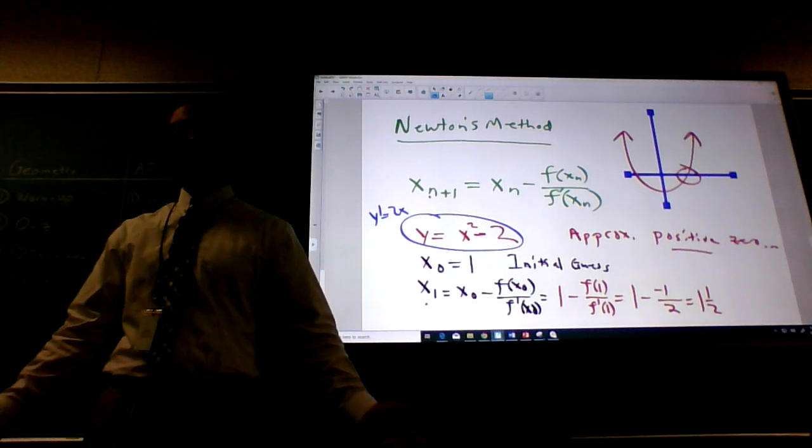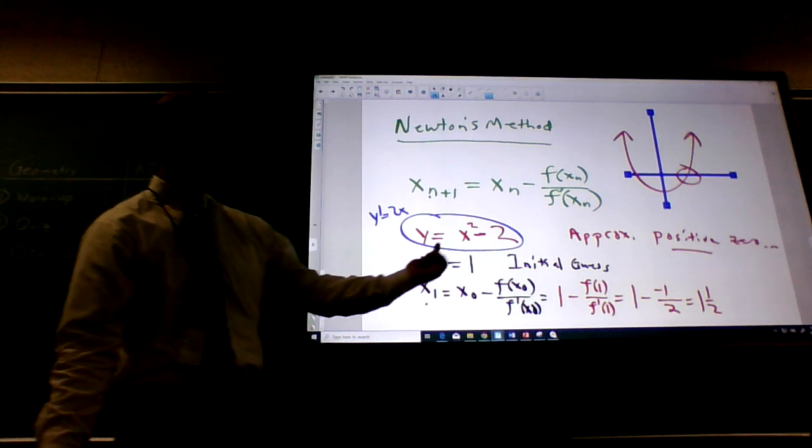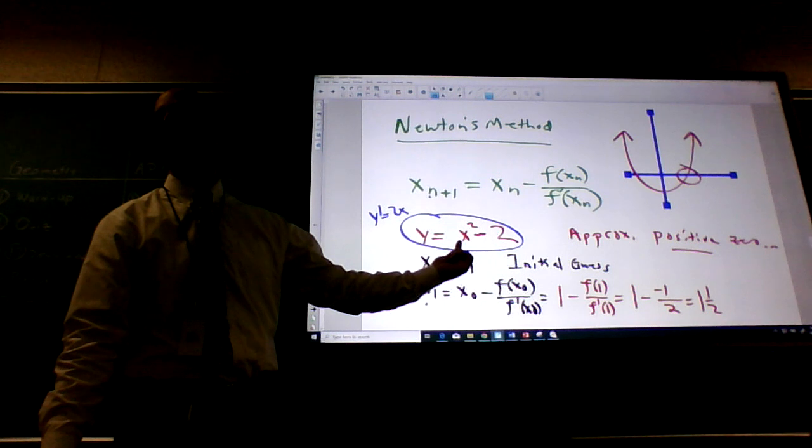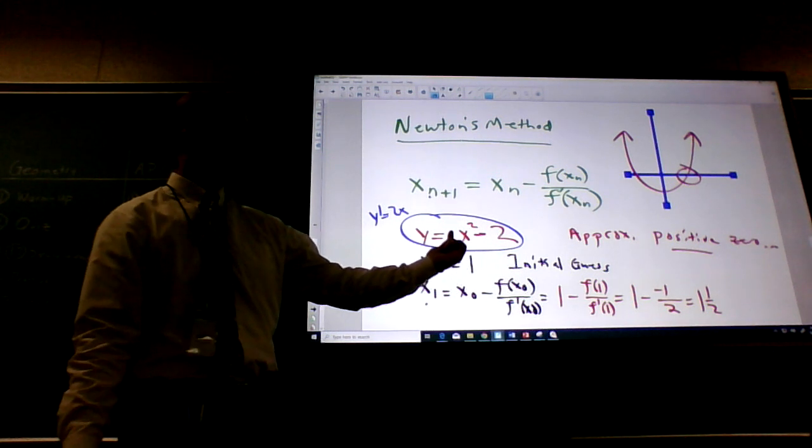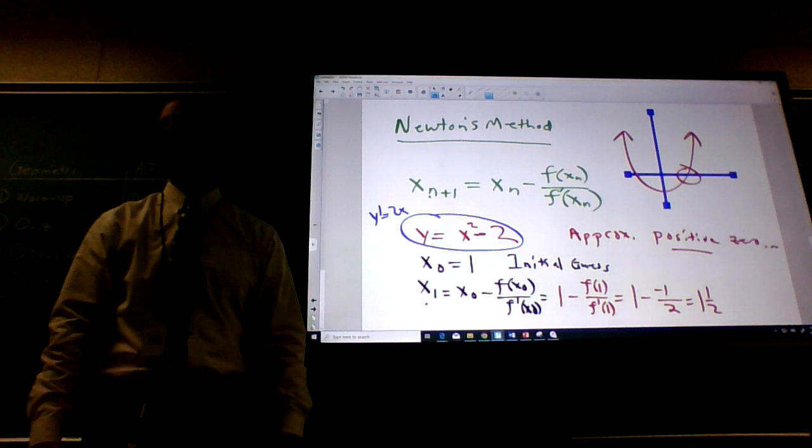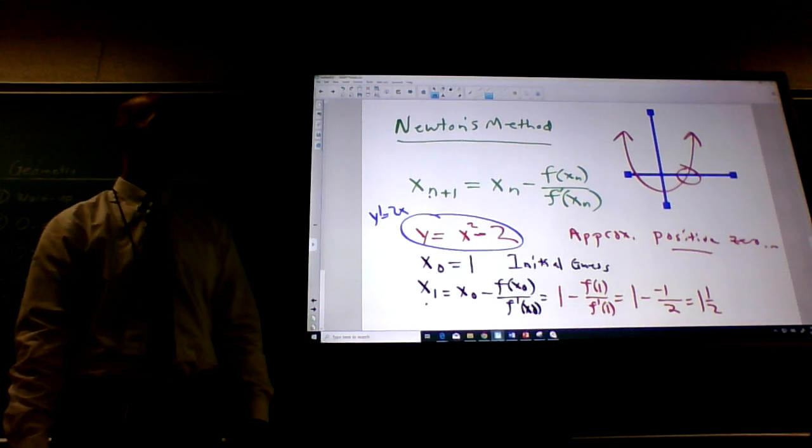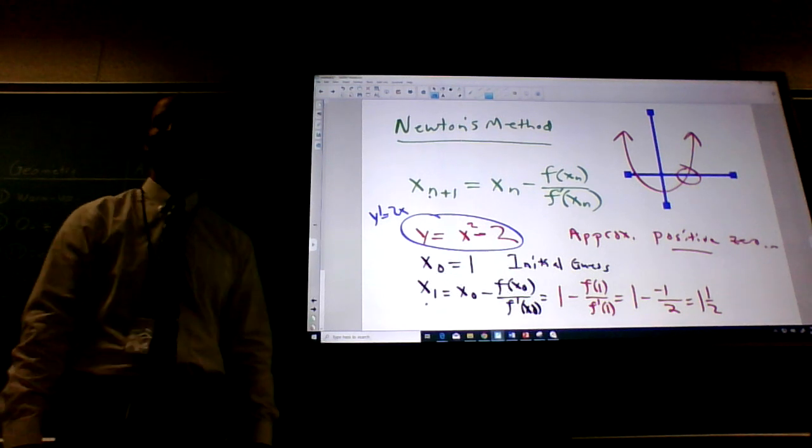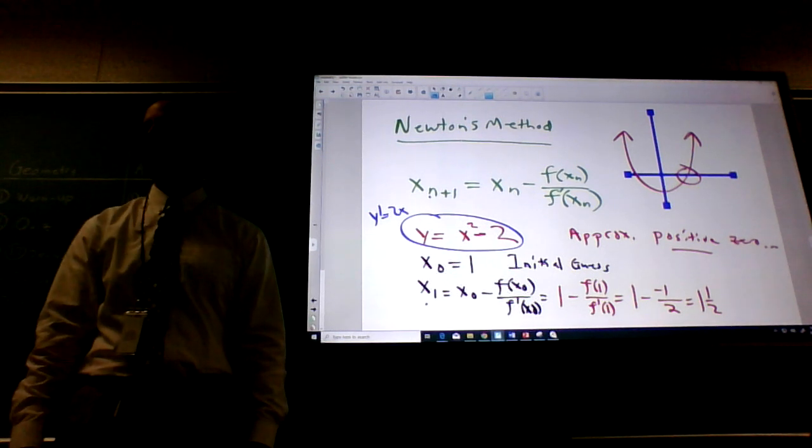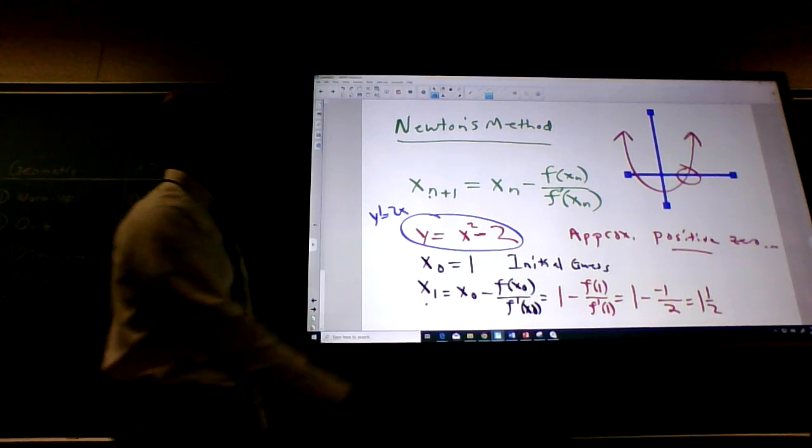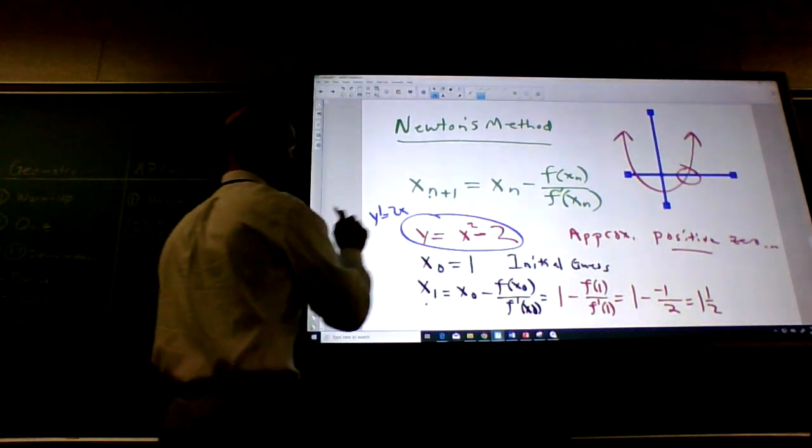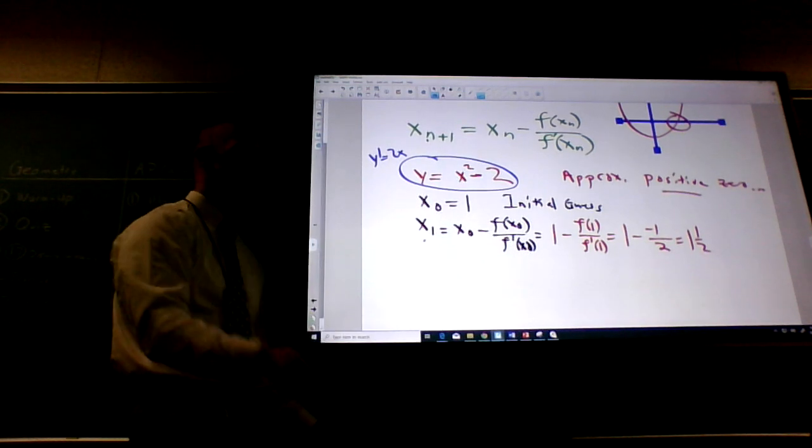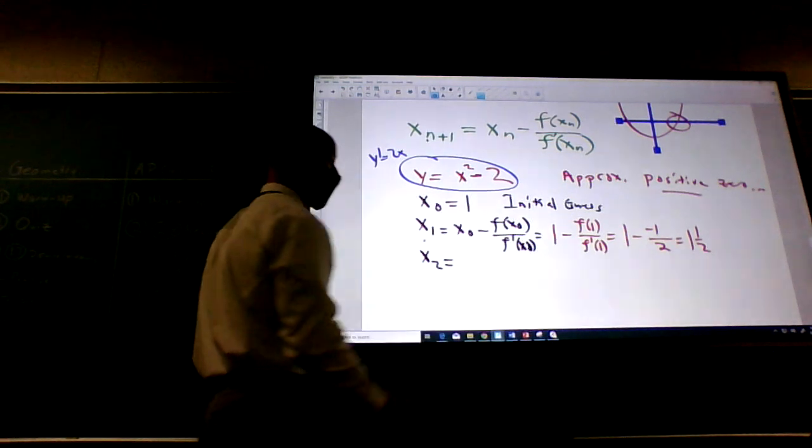So far so good, guys? Does that make sense? Now, is that the exact answer? Well, the answer is no. I mean, if you take 3 halves squared, or 3 over 2 squared, what would that be? That'd be 9 over 4, right? What's 9 over 4 minus 2? That'd be a 4, right? So that's not 0, right? Okay, so how do I get a better, more accurate answer? I've got to do it again. So this is what we call an iterative process. So it means you keep doing it.